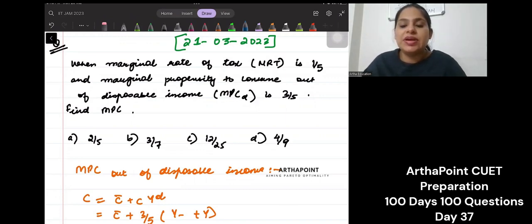It says when marginal rate of tax is 1 by 5 and marginal propensity to consume is 3 by 5, find MPC.